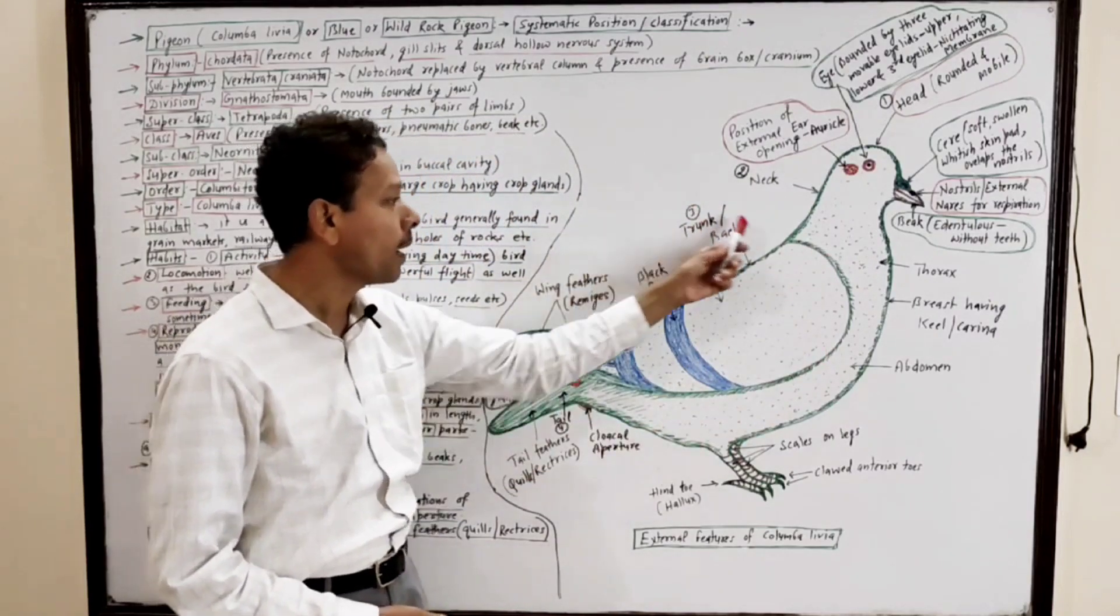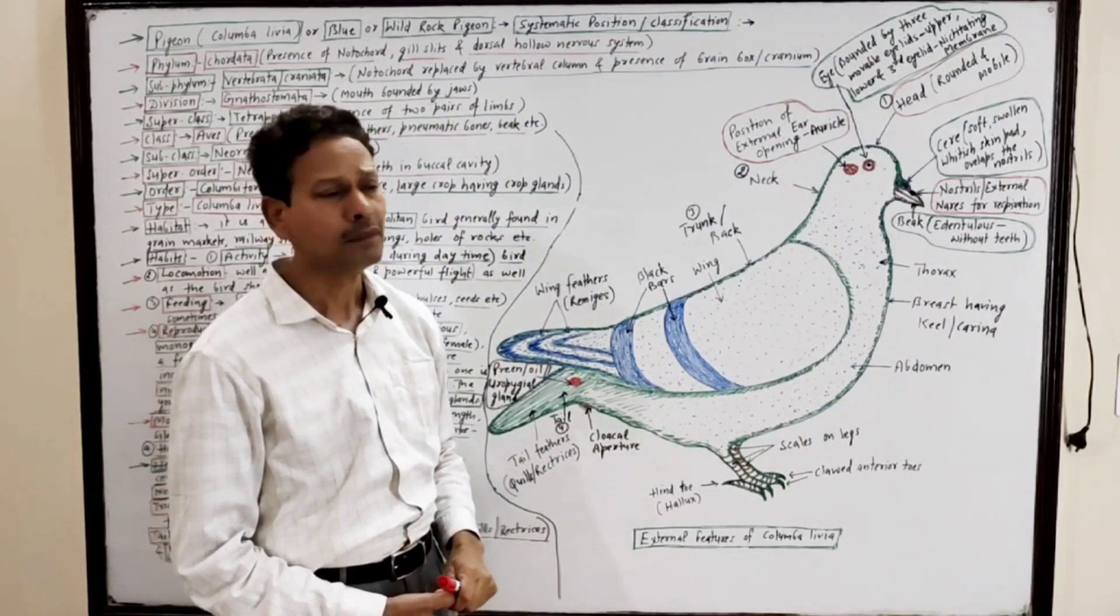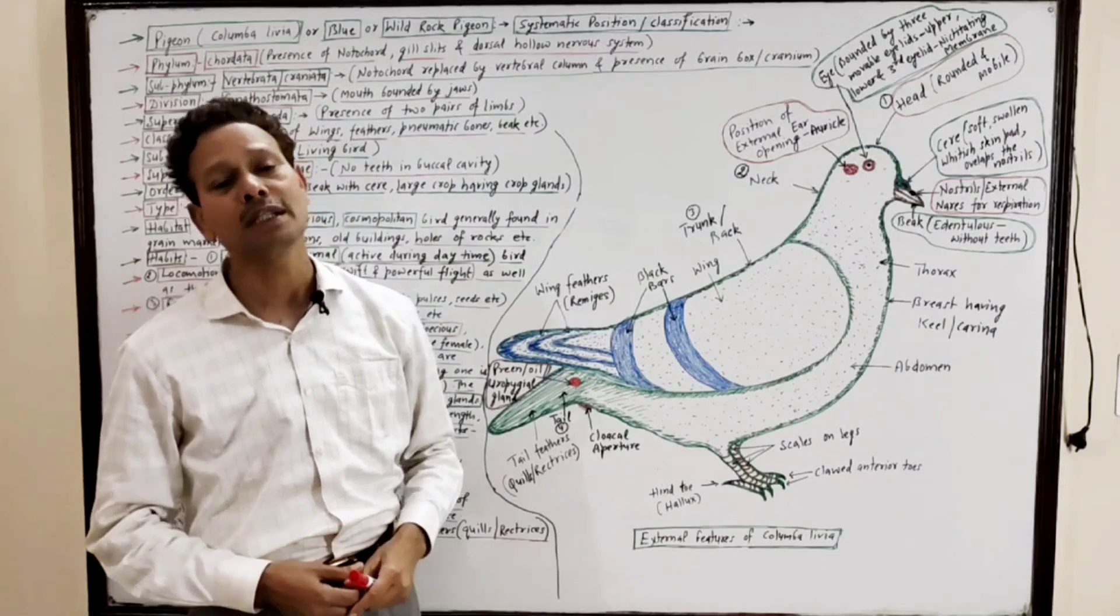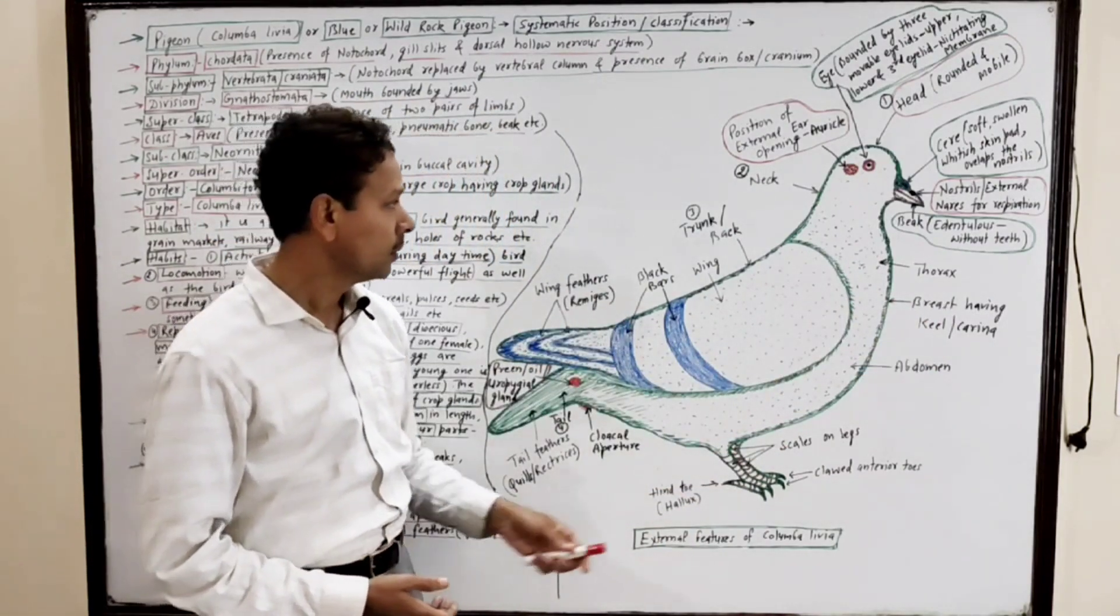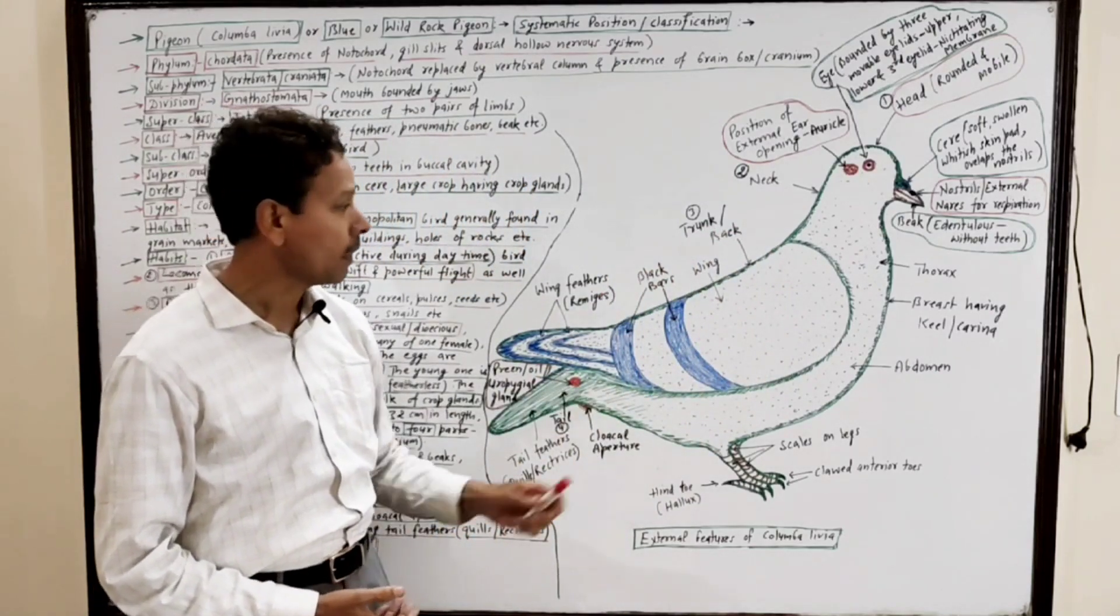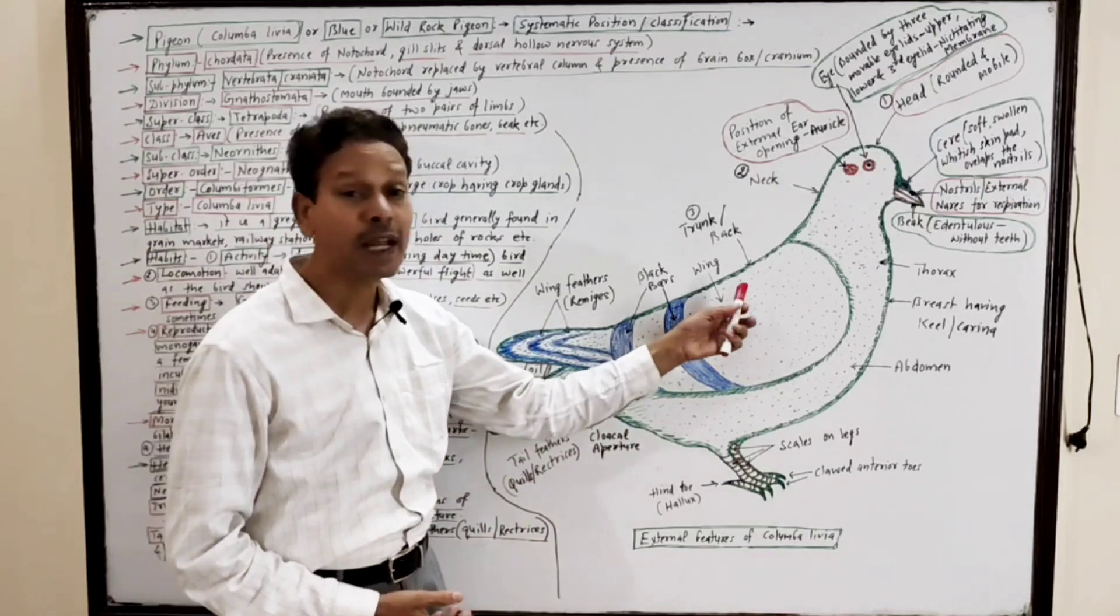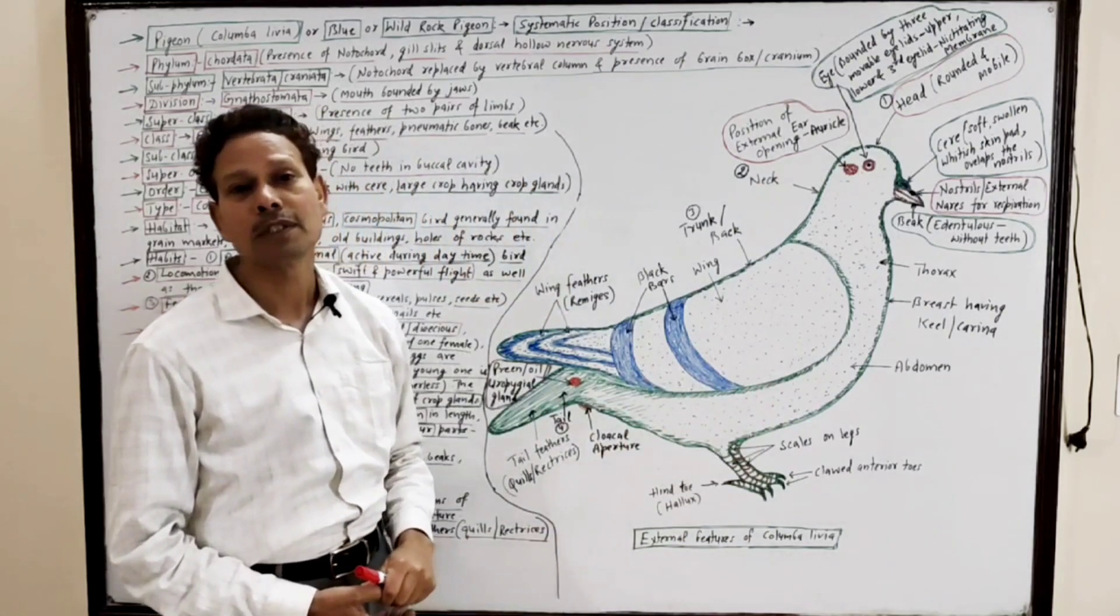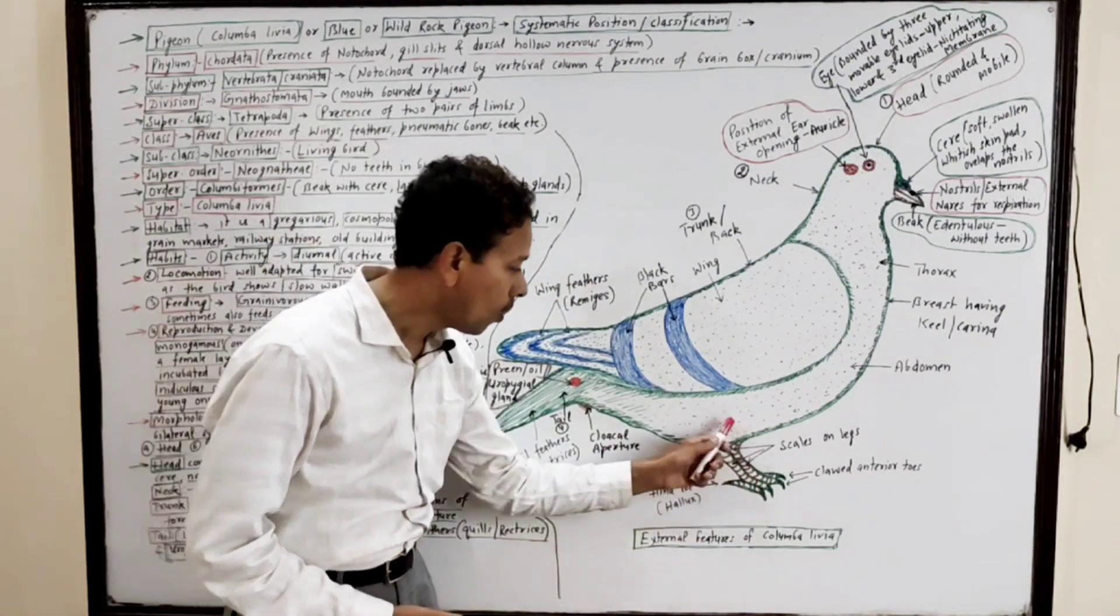Third part is this main part of body, the trunk, which is divided into thorax and abdomen. In this thorax region the breast possesses keel or carina. The abdomen possesses a pair of forelimbs which get modified into wings and a pair of hind limbs, the legs are there.